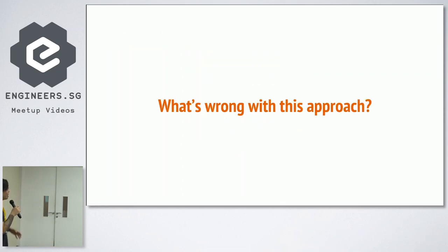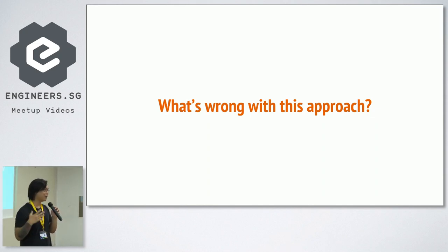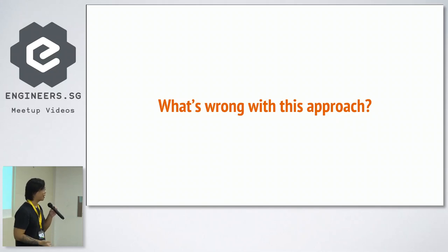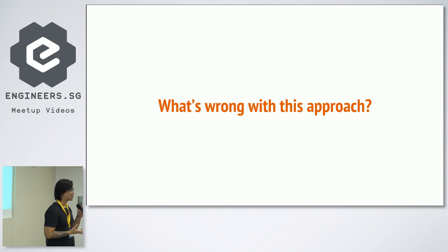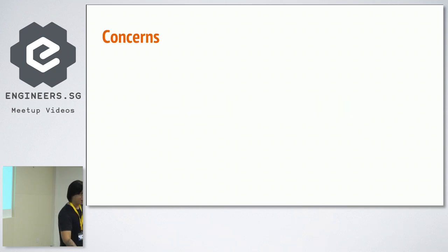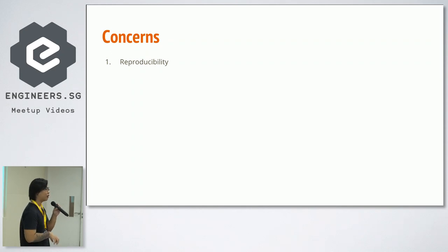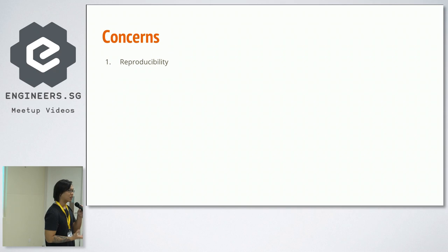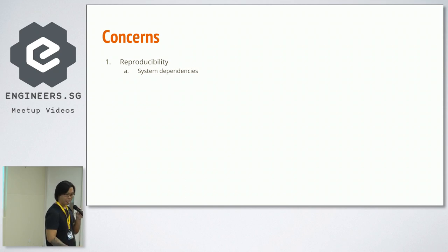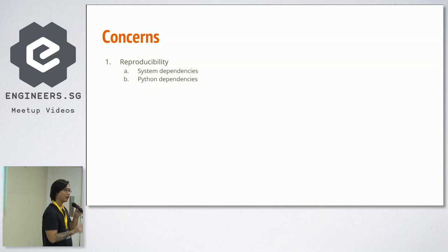What's wrong with this approach? Smaller teams or companies might have taken this approach, but very quickly you realize there are a bunch of problems. The first is reproducibility. If our worker goes down — that single instance goes down — it's nearly impossible to reproduce the environment it was running in, both on the system dependency side, since you manually installed everything, and the Python dependencies. If you go in and pip install stuff without any kind of reference to reproduce the environment, you're in trouble.